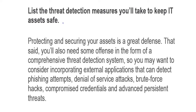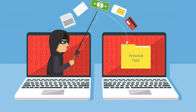Protecting and securing assets is one of the greatest defenses you can have. Sometimes the protection is not enterprise-wide — sometimes it is device-related. You'll need to do some work in the form of comprehensive threat detection systems, and consider incorporating external applications that can detect phishing attacks. Phishing attacks are when people send emails that appear to be from someone they're not, to get you to click a link or reveal important information. We need to know what threat detection mitigation methods are already in place.